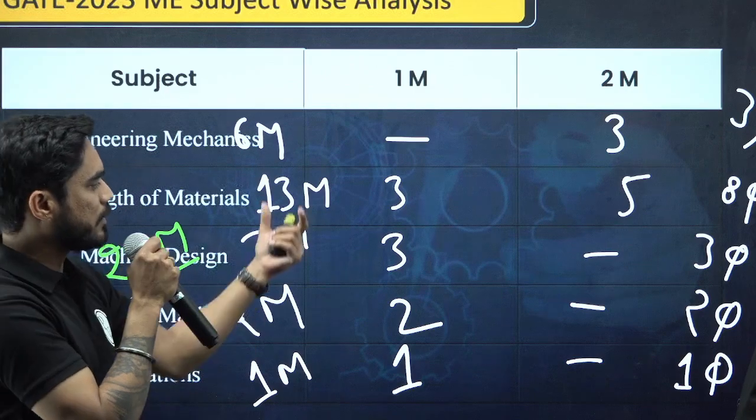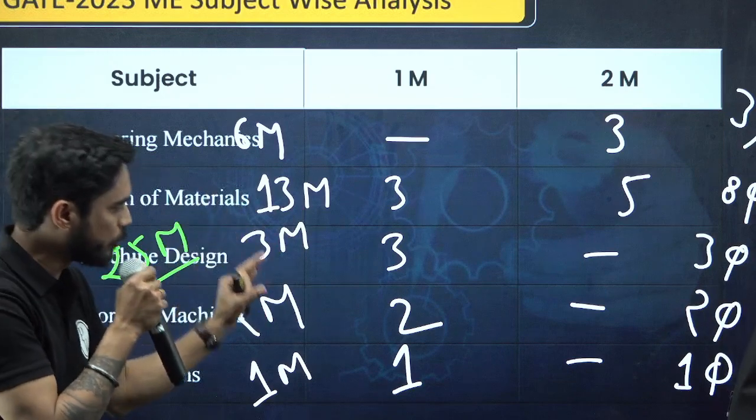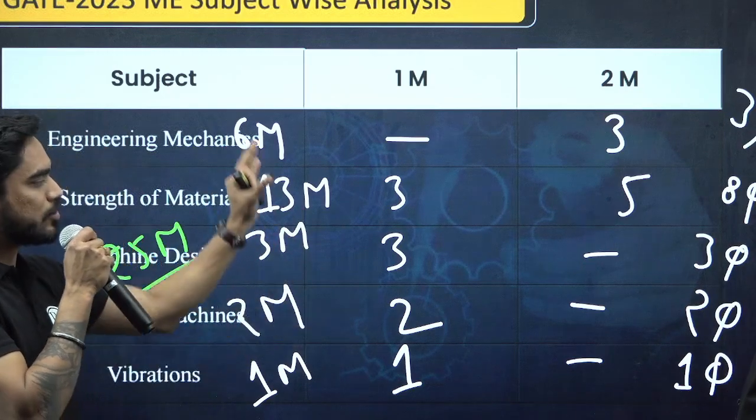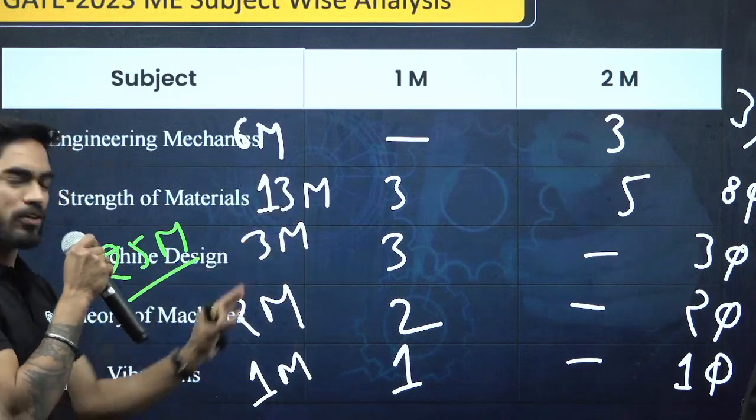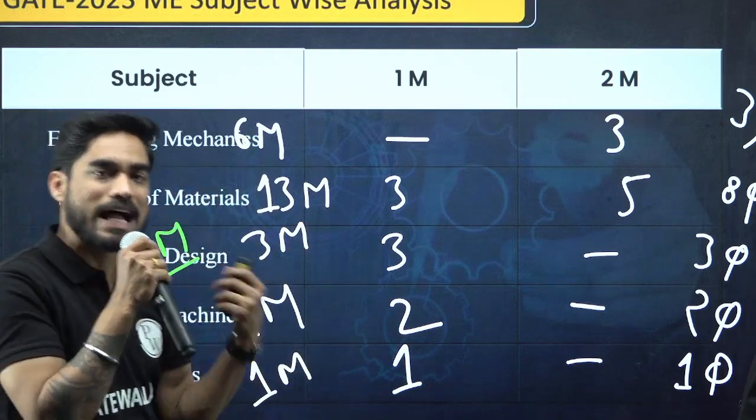Theory of machines, it was not expected that there will be so few questions. There were only 2 questions of one mark. In vibrations also, there was only one question. As far as the difficulty level compared to last year is concerned...